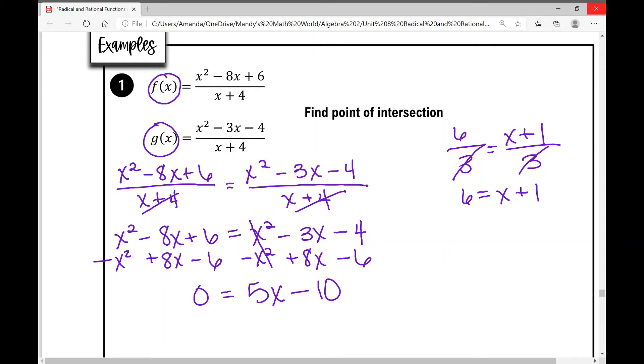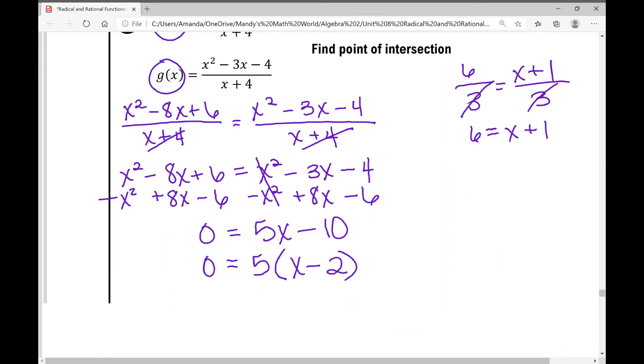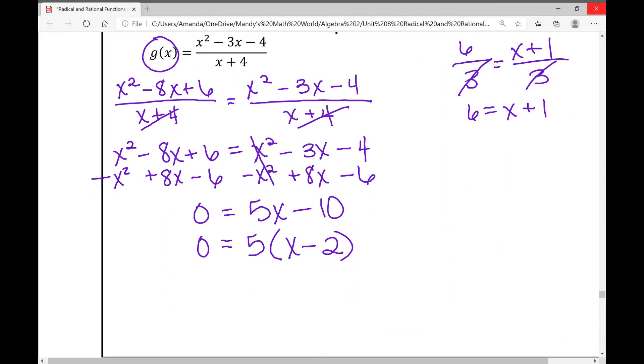And now we're going to factor what's on the right side of our equal sign. So 0 equals, if I divide out a 5, I'm left with x minus 2. And now I need to only set that part that I factored that contains a variable equal to 0. So I actually only have x minus 2. I only have one solution in this problem. So x equals positive 2. And there's my answer. Let's move on to example number 2.